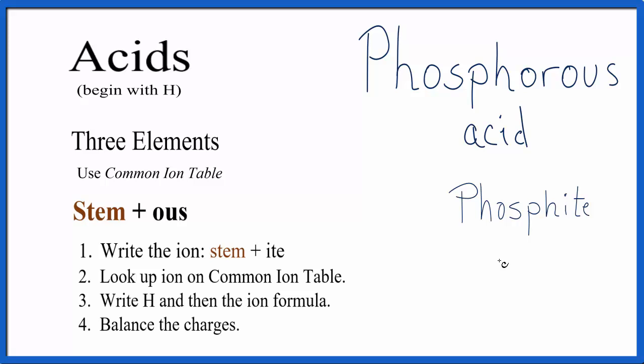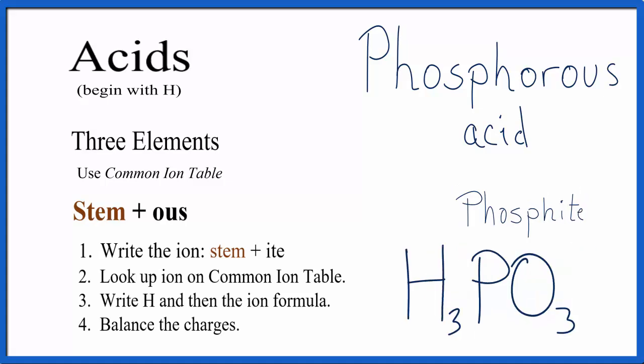Go back to our rules. We write PO3 3 minus and then we put H in front. Remember that H has a positive charge, so we're going to need three H's here to balance out these three minus charges. So we'll put a subscript of three here. That means our net charge is zero and H3PO3 is the formula for phosphorous acid.